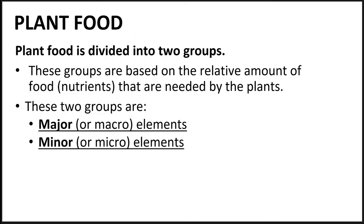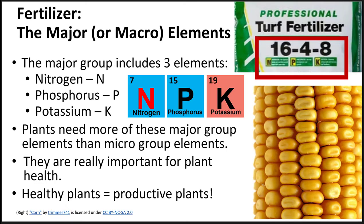Plant food has two major components: macro and micro elements, which refers to the relative amount of the nutrients needed by the plant. Both are very important for plant growth. Let's look at the major elements first. The three major nutrients are N for nitrogen, P for phosphorus, and K for potassium.